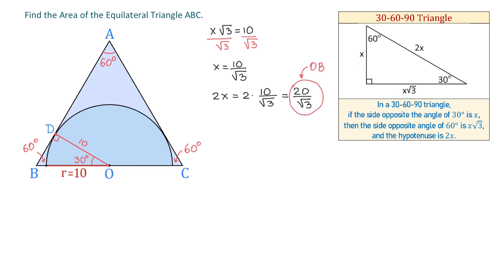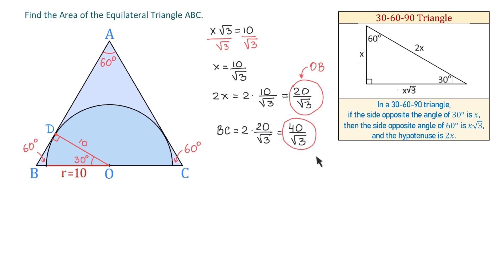Now, OB is half of the side of the triangle. To find BC, we need to double this quantity. So BC equals 2 times 20 over square root of 3, which equals 40 over square root of 3. So now we know the side of the equilateral triangle.